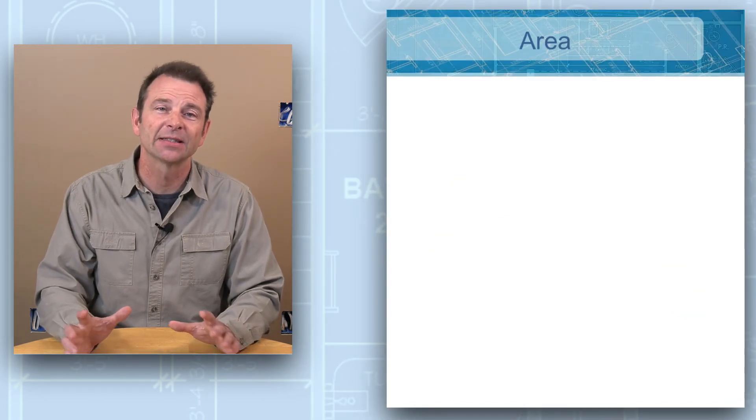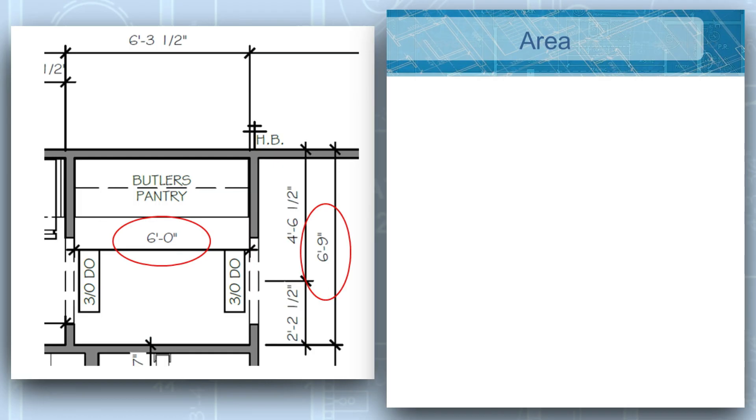So given those dimensions, let's set up our equation. So our length is going to be six foot nine minus the dimension of that wall, which is three and a half inches, and we're going to multiply that times the width of our room, which is six feet. So that's going to bring us to six foot five and a half inches times our six feet. Let's convert both those numbers to inches. That gives us 77 and a half inches times 72 inches, which gives us a total square inch measurement of 5,580.